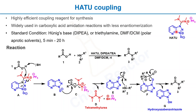HATU is a highly efficient coupling reagent in organic synthesis, and that's why it's widely used in carboxylic acid amidation reactions. Another reason why organic chemists prefer HATU is that it has really low enantiomerization properties, which makes it a very important coupling reagent especially in peptide chemistry.